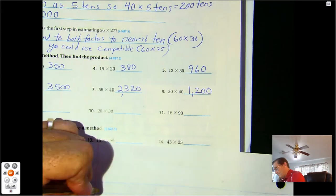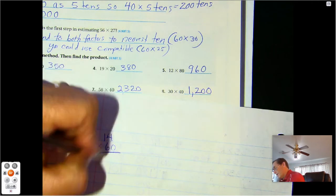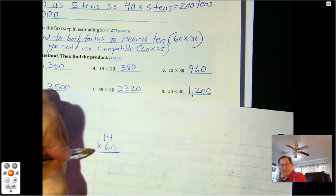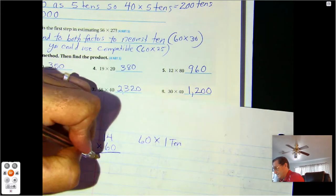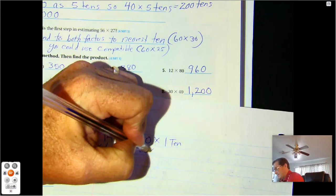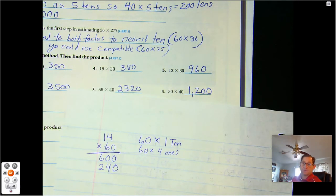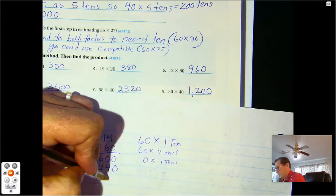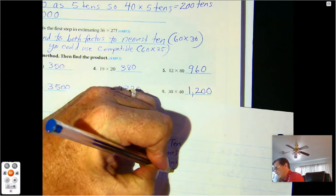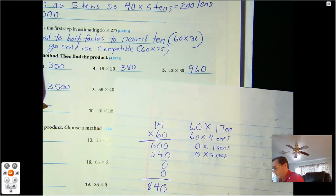Number nine. 14 times 60. We can break this up as 60 times 10 and 60 times 4. 60 times 10 is 600. 60 times 4 ones, 6 times 4 is 24, plus the zero from the 6 tens, so 240. Zero sets of 10 is 0, zero sets of 4 ones is 0. Add up our columns. So 840.